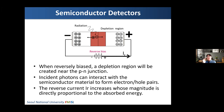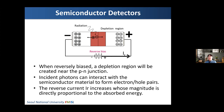The same principle is used for the photodiode. The photodiode has the same structure and same principle — reverse bias voltage is applied, and if some light photon comes in, it generates electron and positive ion pairs that produce an electric current. The only difference between the photodiode and semiconductor detector is that the photodiode is sensitive to visible light, while the semiconductor detector is sensitive to gamma rays or x-rays.